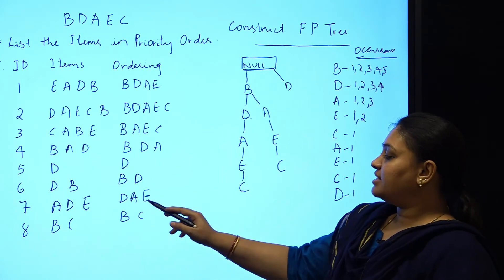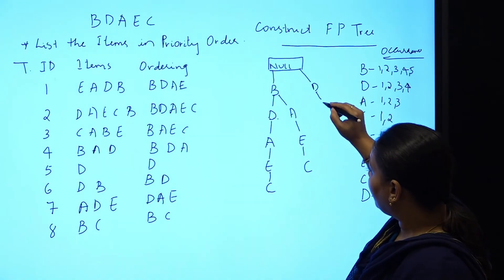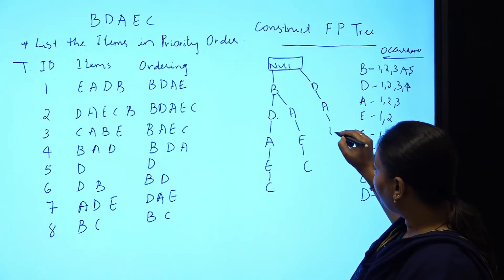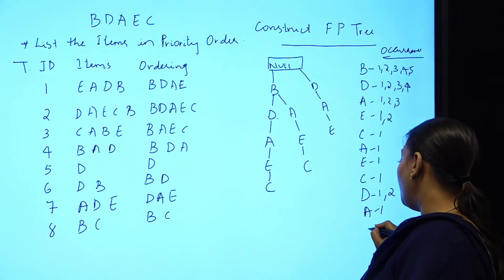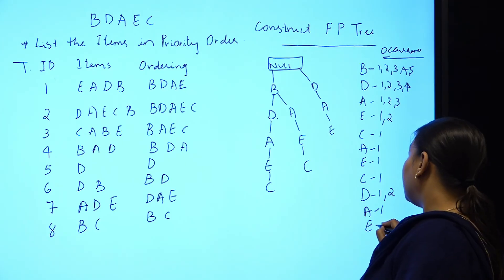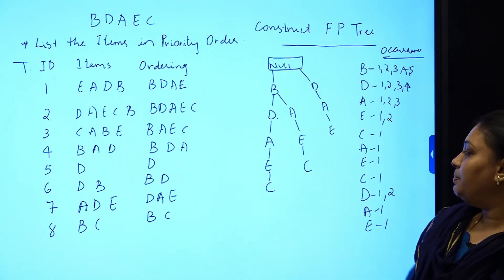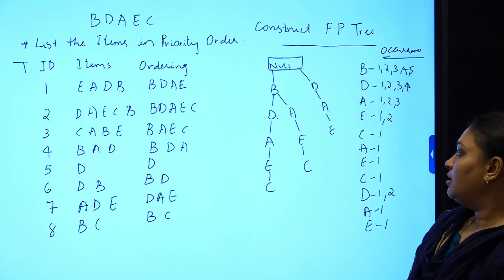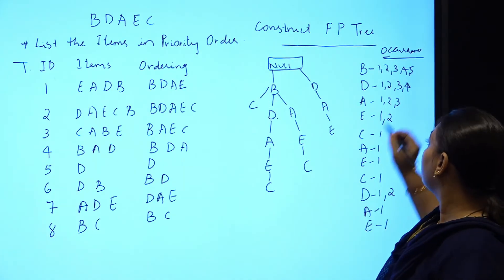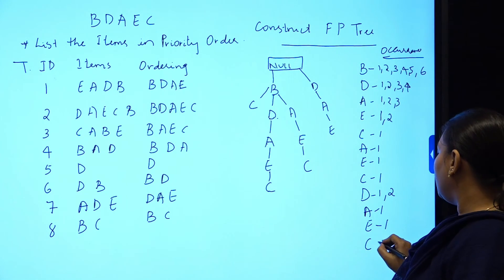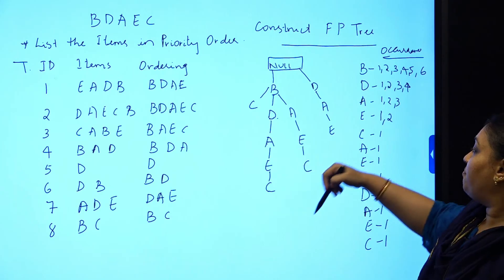For the seventh transaction (D, A, E), D exists as a child of null. A and E are new under this D, so we add D→A→E as a new sub-branch: A=1, E=1 under that D, and D becomes 2. For the eighth transaction (B, C), B already exists. C is a new child of B, so B becomes 6 and C=1 as a direct child of B.